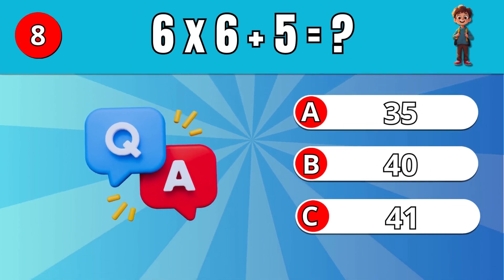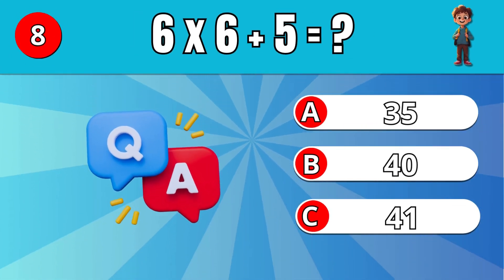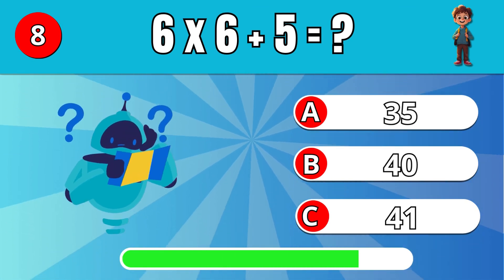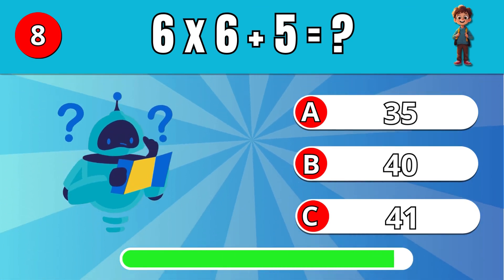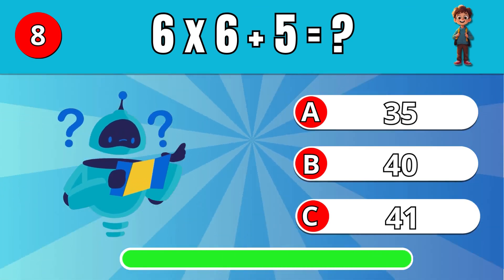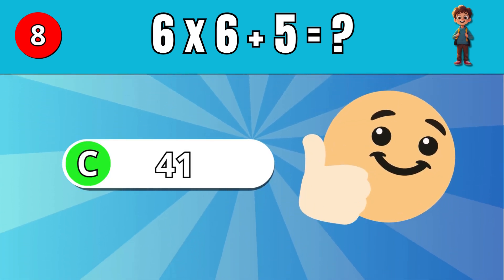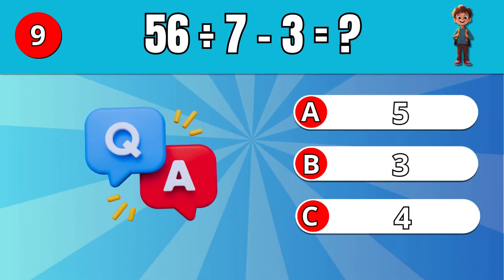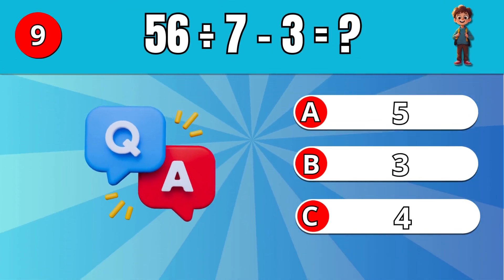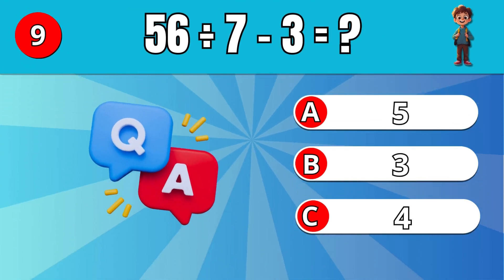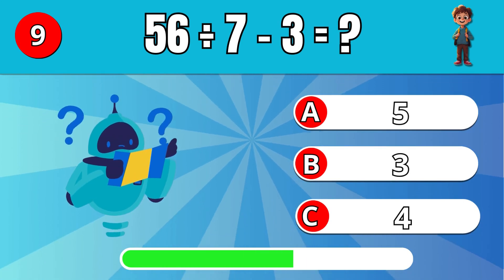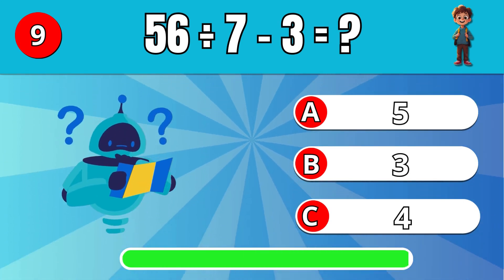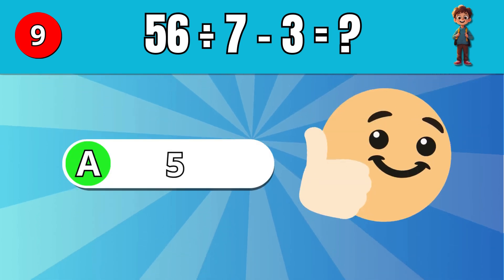What is 6 times 6 plus 5? C: 41. What is 56 divided by 7 minus 3? B: 5.